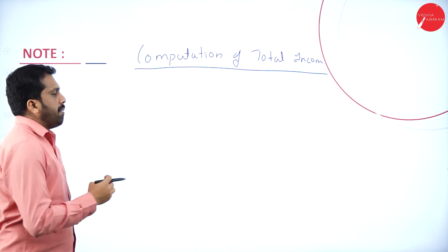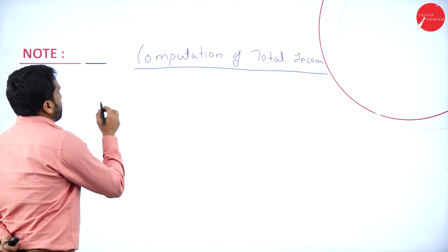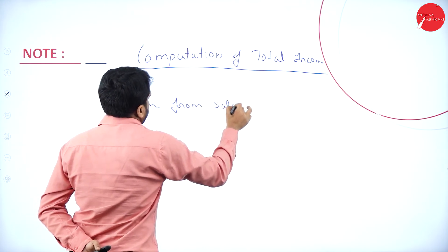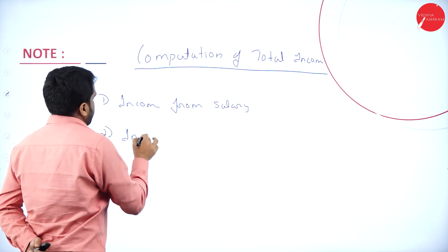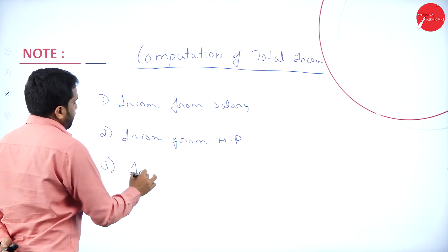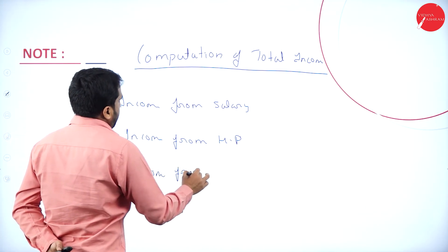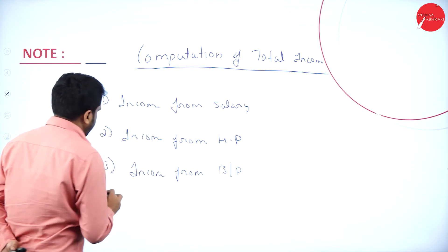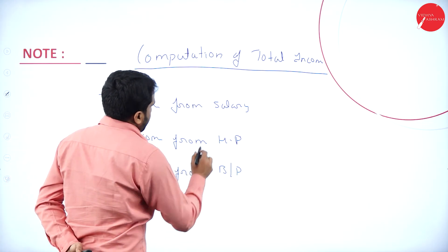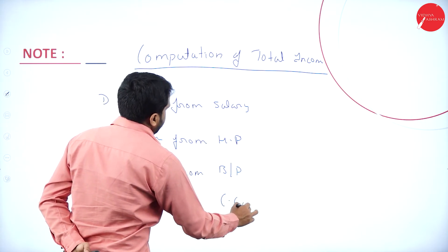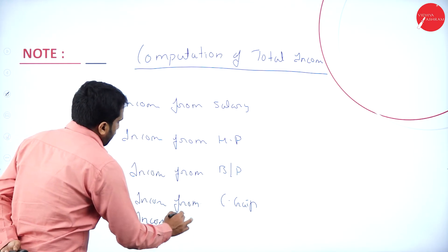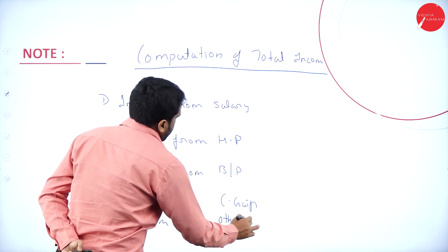Under computation of total income, the five heads are: first, income from salary; second, income from house property; third, income from business or profession; fourth, capital gain; fifth, income from other sources.